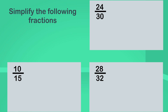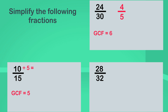Let's see how you went. The greatest common factor of twenty-four and thirty is six. Twenty-four divided by six is four. Thirty divided by six is five. Four-fifths. The greatest common factor of ten and fifteen is five. Ten divided by five is two. Fifteen divided by five is three. Two-thirds. The greatest common factor of twenty-eight and thirty-two is four. Twenty-eight divided by four is seven. Thirty-two divided by four is eight: seven-eighths.